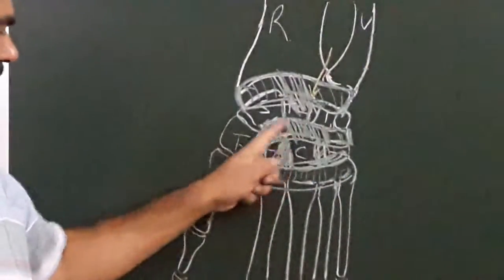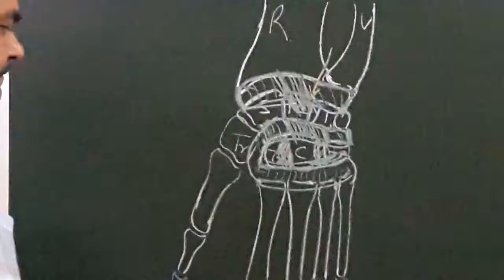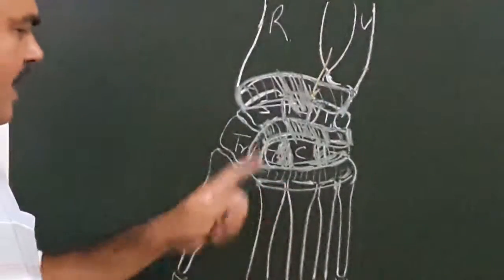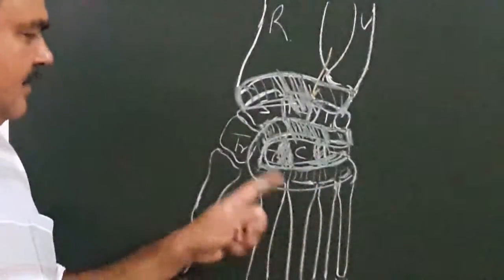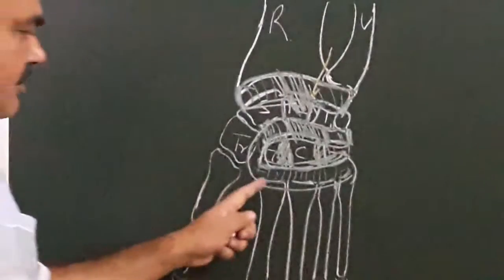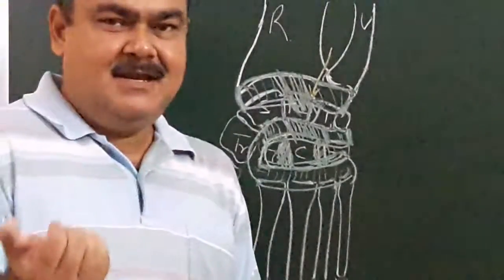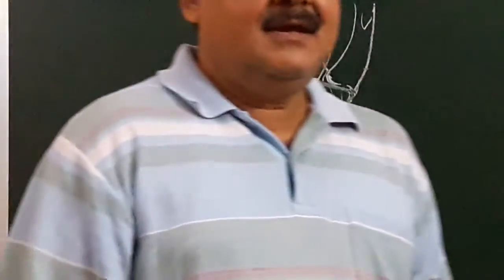So this space communicates with this space, and movement at this joint here is flexion, extension, and slightly adduction and abduction.